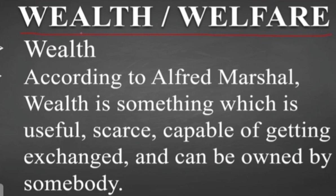First we are going to cover wealth. According to Alfred Marshall, wealth is something which is useful, scarce, capable of getting exchange, and can be owned by somebody. In simple terms we can call it 'sampati.' The wealth must have features like: it must be useful, it must be scarce — not available in plenty — it must be capable of getting exchange, and it can be owned by somebody.